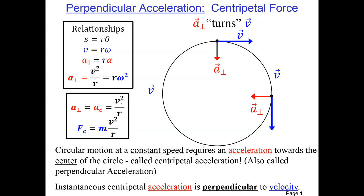Here we have some object and it is running around in a circle at a constant speed. For this to happen, this requires an acceleration that is pointing towards the center of the circle. This is sometimes called the perpendicular acceleration or the centripetal acceleration. When a force is applied perpendicular to the motion of an object, it causes that motion to turn.